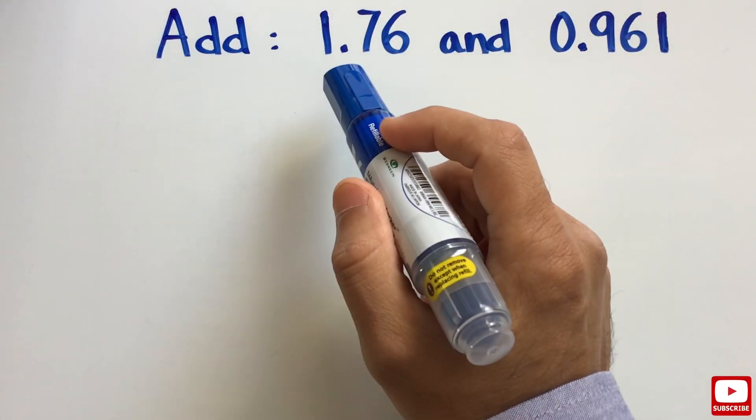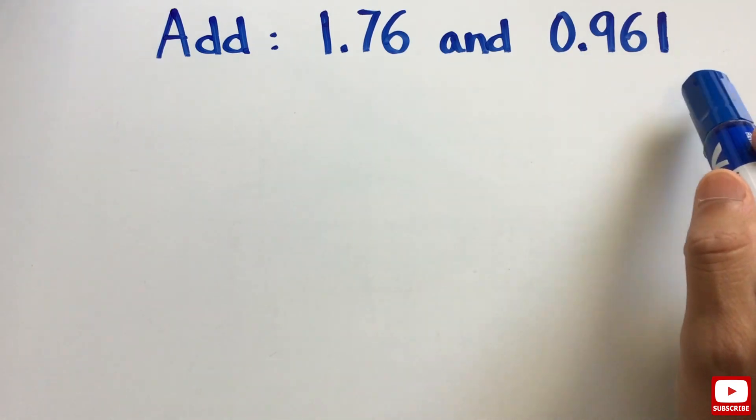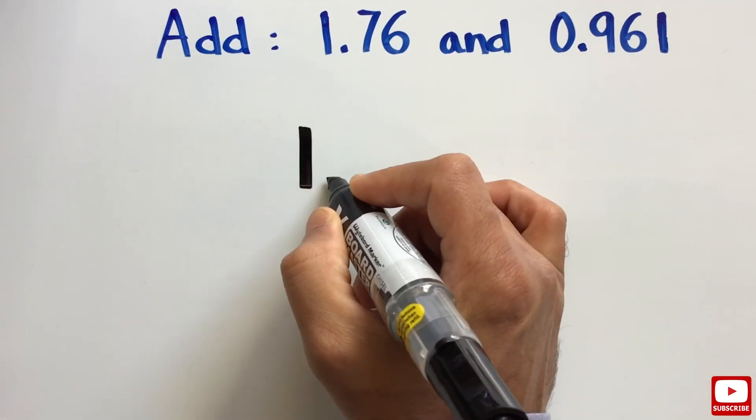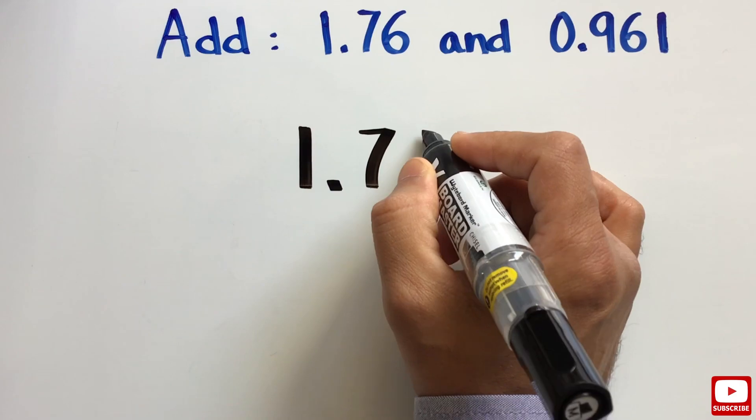Let's say we need to add 1.76 and 0.961. While adding decimal numbers, it really doesn't matter which number you keep on top.